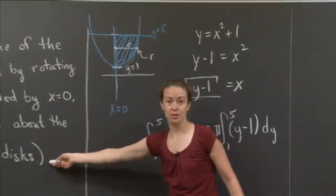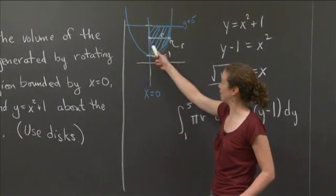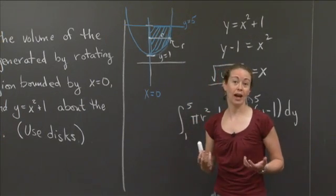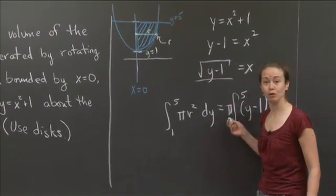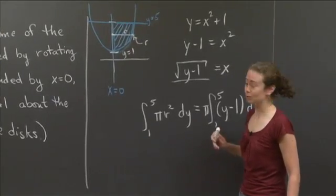I said you had to use disks. So we had to figure out what the radius was in terms of y. And then we had to figure out what the bounds were in terms of y. And once we do that, it's a simple matter of finding the actual value for what this integral is. So I think that is where I'll stop.